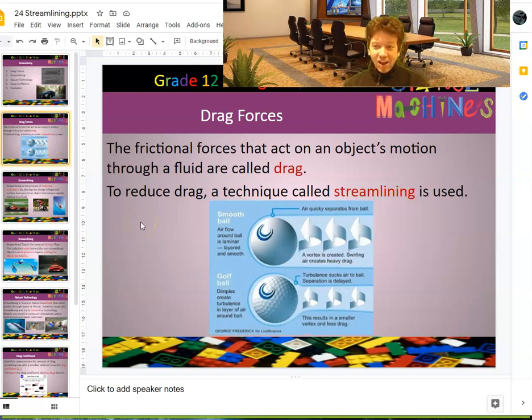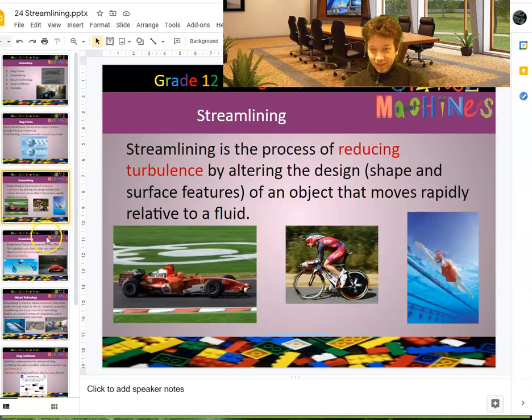Any object moving through a fluid is going to feel some sort of frictional force that opposes its motion. And if it's moving through a fluid, we call this frictional force drag. And to reduce drag, we have to streamline. Streamlining reduces turbulence because turbulence, as from yesterday's lesson, causes those eddies which remove kinetic energy away.